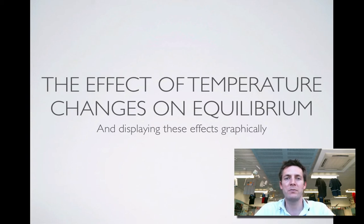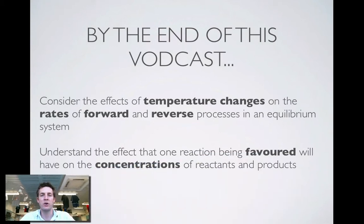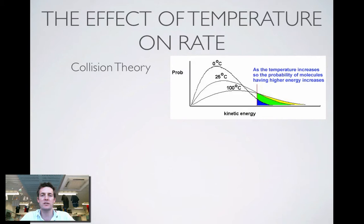Hello and welcome to another film about the effect of temperature on equilibrium. You've hopefully seen the one where we've introduced some practical experiments and hopefully you've also looked at the principles behind this. This film looks at the graphs that we might see — what happens to the rates of the forward and backward reactions when temperature changes occur and how these changes might affect our concentrations. Let's start off by looking at the effect of temperature on rate, and that is a collision theory explanation that we need to employ.